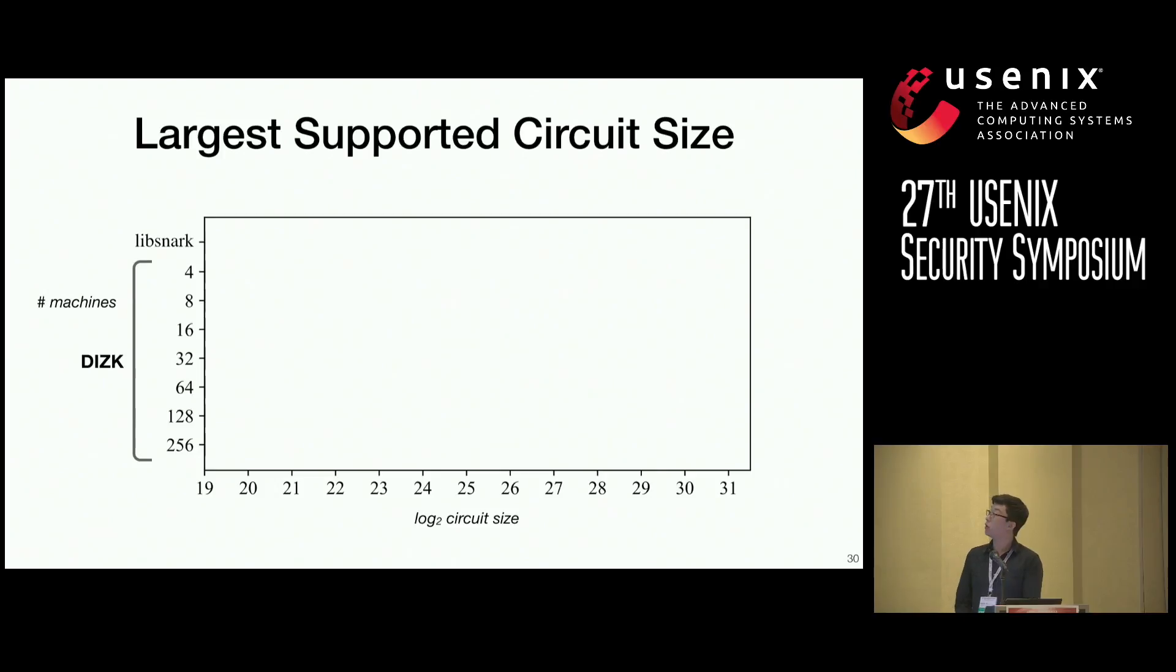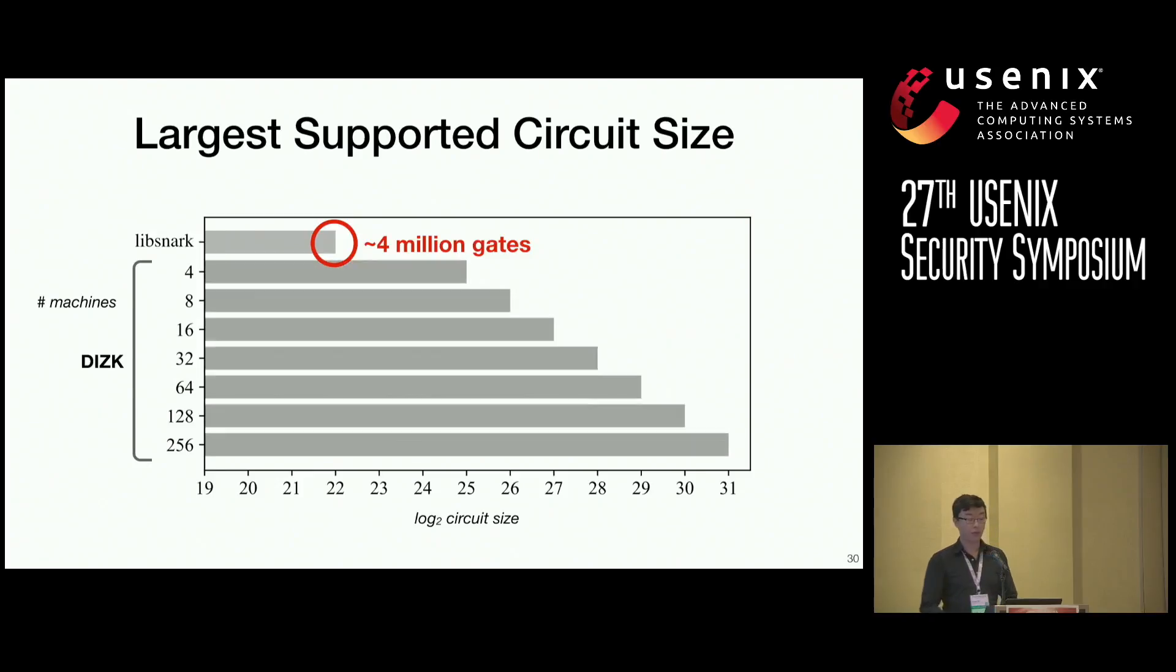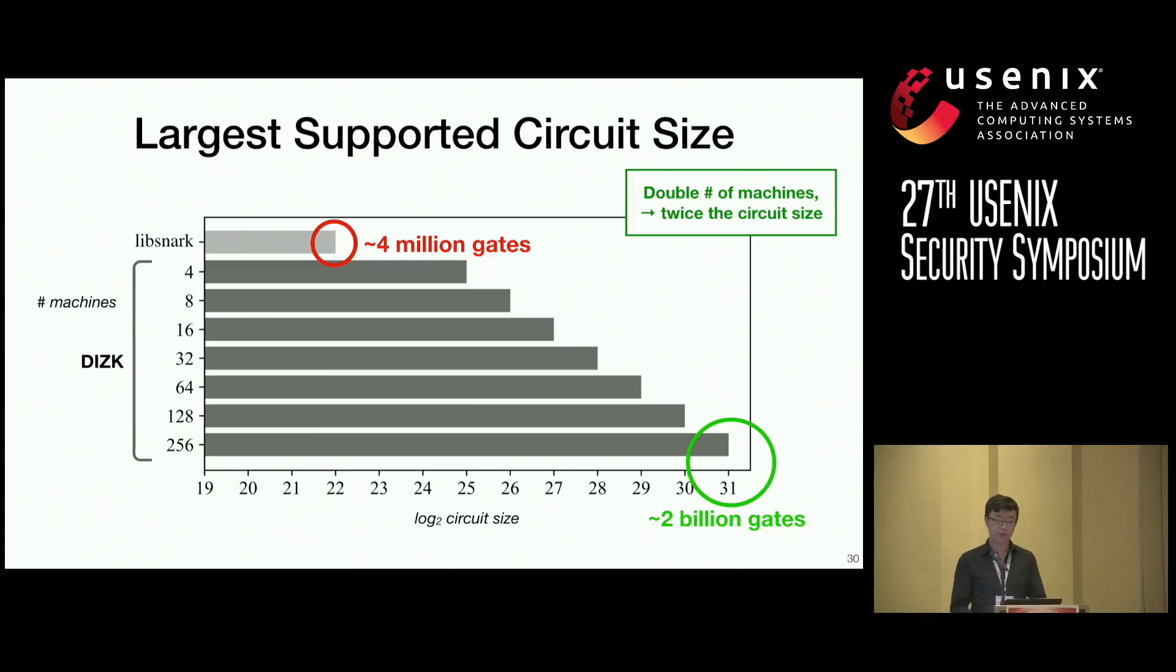First, we evaluated our system on the largest supported circuit size. So, when we profiled LibSNARK in our environment, we found that it reaches approximately 4 million gates. And when we profiled DIZIK across different numbers of machines for the same environment, we found that we were able to reach approximately 2 billion gates with 256 machines. The pattern that we see here is that as we double the number of machines, we're able to support approximately twice the circuit size.